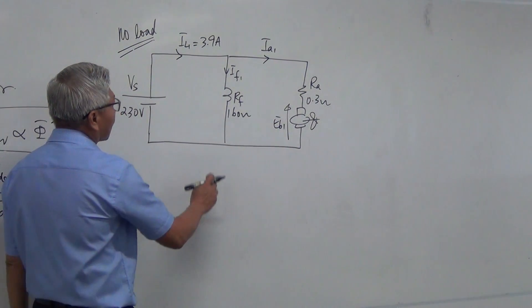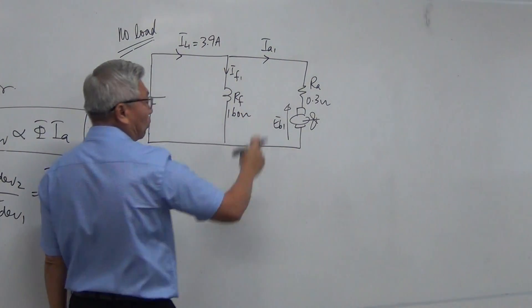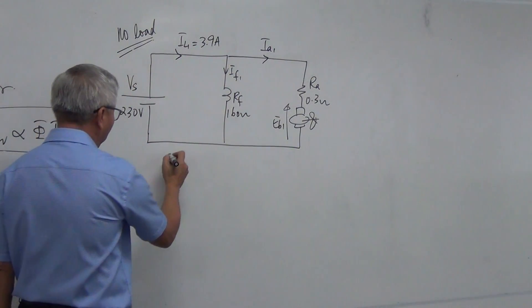Now in this circuit here, we need to find IF1, we need to find Ia1. Let's find IF1 first.